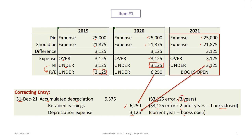You don't necessarily have to put this kind of table together if you understand what's going on. You can recognize that the current year's books are still open, adjust this year's depreciation expense and accumulated depreciation in one entry, and then make a retrospective adjustment to retained earnings for the two prior years ($3,125 × 2). If you're having trouble, it's a good idea to identify the impact in each year so you can follow it through and make the correct adjustment.